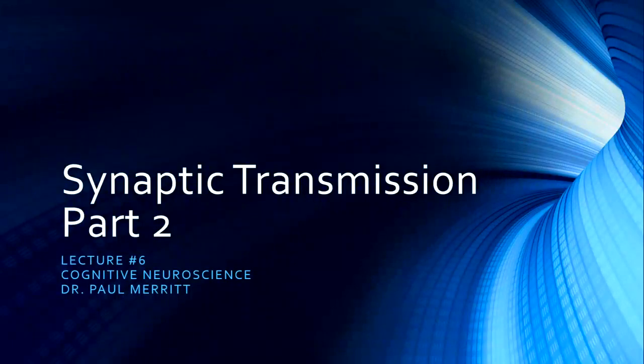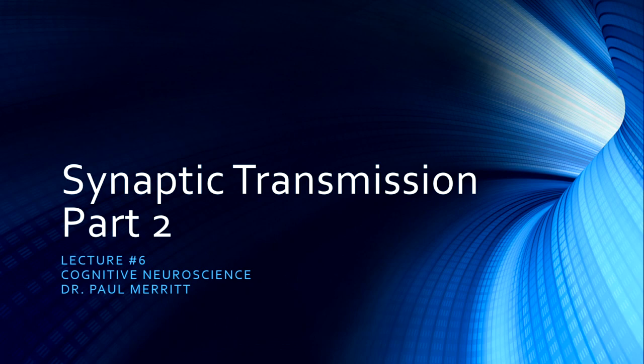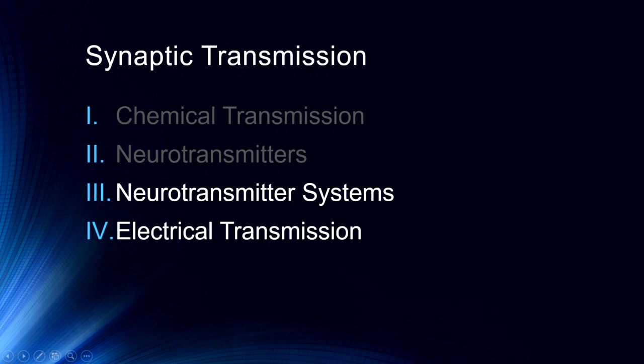Hello and welcome to our sixth lecture. This is our final wrap-up for synaptic transmission, focusing specifically on the process of neurotransmission and neurons. In the next couple of lectures we'll be looking more at overall neural anatomy, brain structures, nervous systems, etc. But let's finish up our discussion of synaptic transmission. We talked in the last lecture about chemical transmission and neurotransmitters.